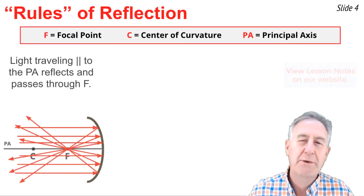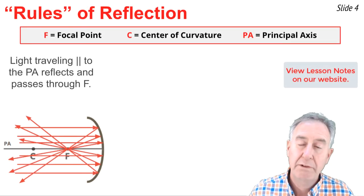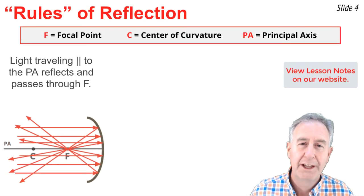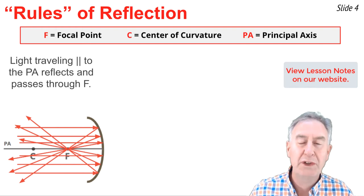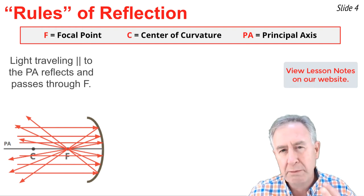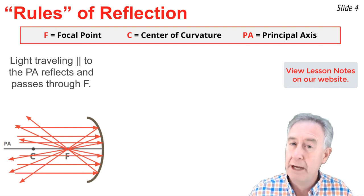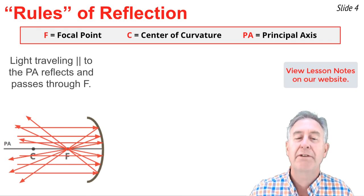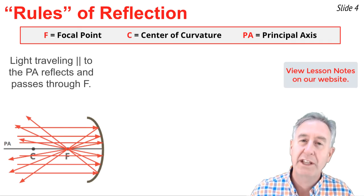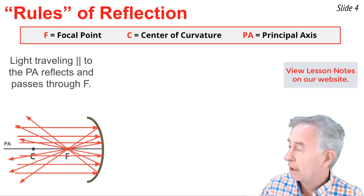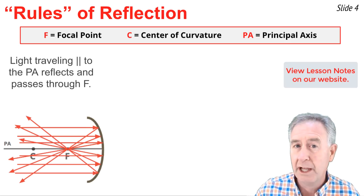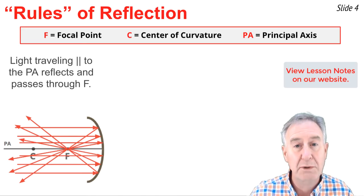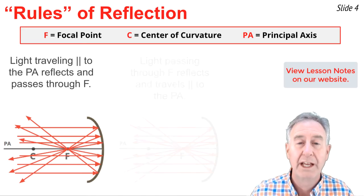We need to understand these terms in order to understand this video on how to construct ray diagrams for concave mirrors. When an incident ray of light reflects off the mirror, it follows the law of reflection. But it's useful to know three special rules about light waves in order to draw ray diagrams. The first one is that light traveling parallel to the principal axis on the way to the mirror will reflect and pass through the focal point.